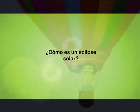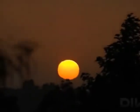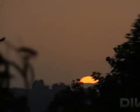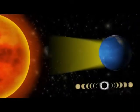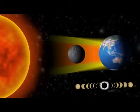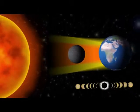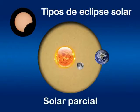¿Cómo es un eclipse solar? El eclipse solar parcial es aquel donde la Luna no cubre por completo el disco solar, que aparece como un creciente.